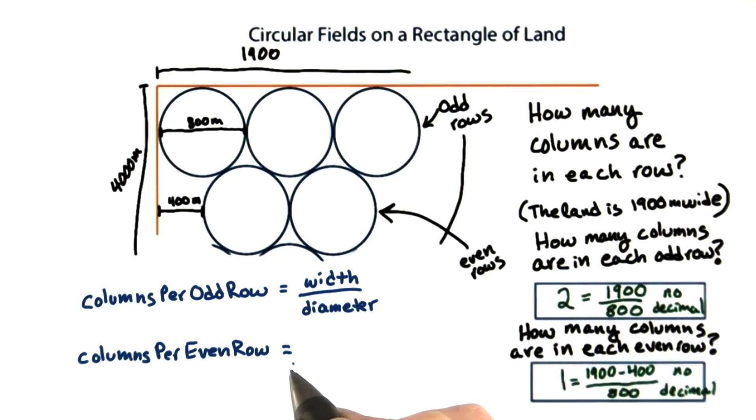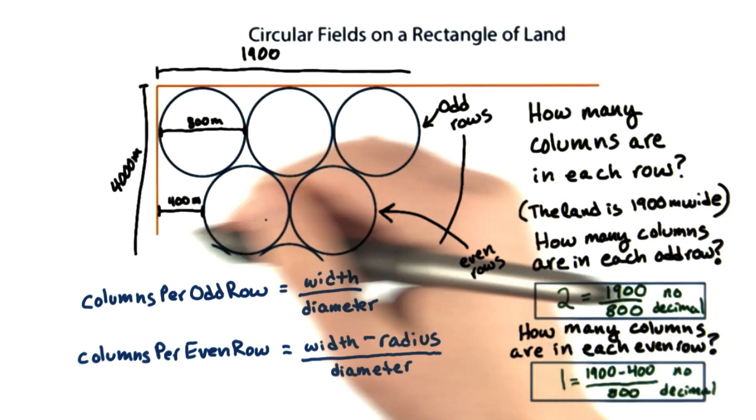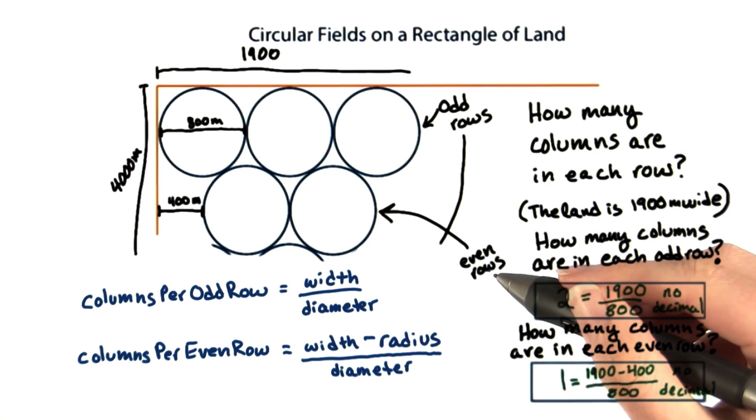To calculate the number of columns per even row, we start with the width, subtract the radius, or 400, divide by the diameter, and then drop the decimal. Write this down—you're going to want it for later.